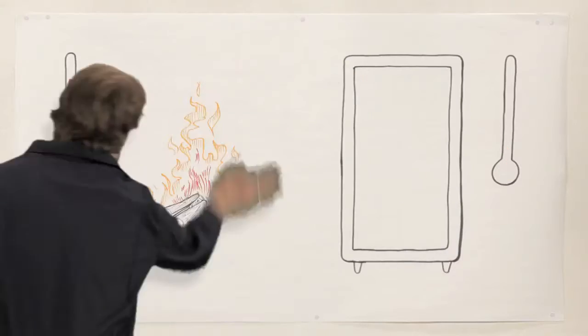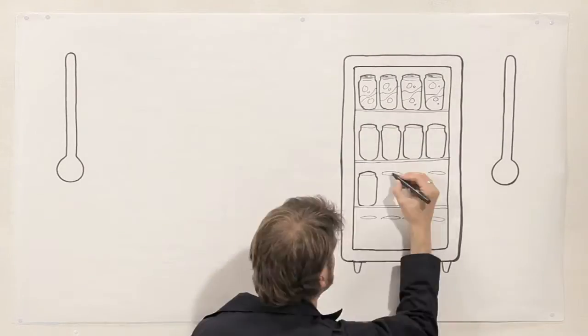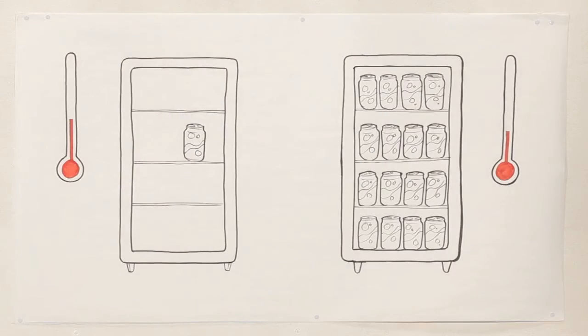When heat is transferred by conduction, the material absorbs and stores some heat energy. It's called thermal inertia. Water has a much higher thermal inertia than air, so a fridge full of cold drinks will keep cool longer than an empty fridge if the power goes out.